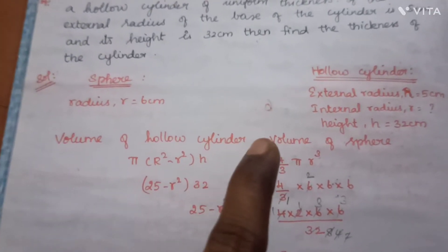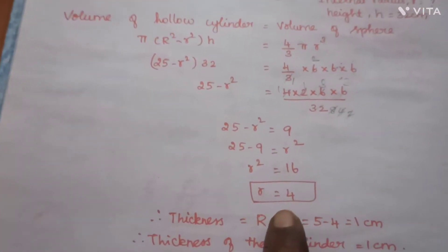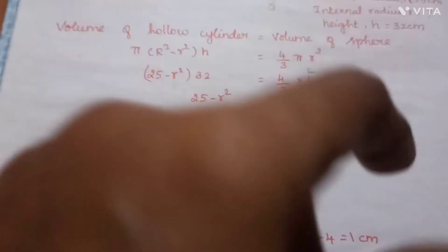We will find the thickness. The thickness formula is capital R minus small r.